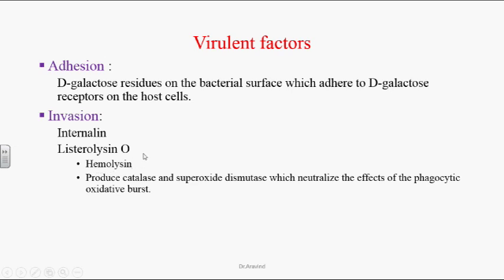Listeriolysin O breaks the endocytotic vesicle membrane so the Listeria organism can come out. Phospholipase substances secreted by the Listeria organism also help in the same way. These organisms can inhibit oxidative burst inside the host cells by producing catalase and superoxide dismutase enzymes to neutralize it.